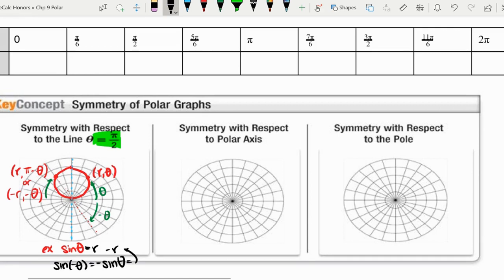That would equal opposite r, opposite of the original. So we can still do those algebraic checks. But again, if they fail, it doesn't mean there is not symmetry. Just a quick overview of that.